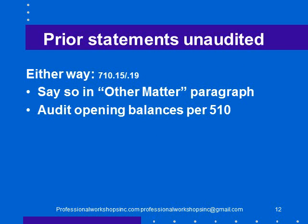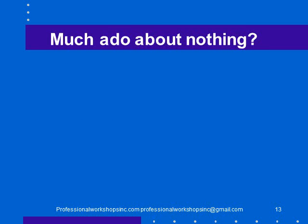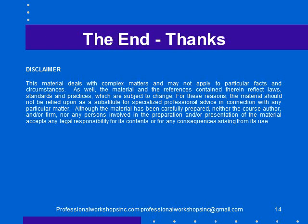If the prior statements were unaudited, again it doesn't matter which type — you will say so in an other matter paragraph, and remember that per ISA 510 we have to audit the opening balances, so we would have to do some additional audit work to make sure the opening balances are okay. In the end, I think it's much ado about nothing, because we're going to do the same thing in both types of comparative information. We're probably safer if we do comparative financial statements all the time and explicitly get management to confirm that we're on the hook for both years. Thanks for listening.